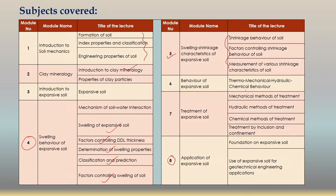In Module 6, I explained the different thermomechanical, hydraulic and chemical behaviour of expansive soil — how expansive soil behaves when there is a temperature change, or when it comes in contact with different chemicals, under different mechanical forces, and what is its hydraulic behaviour under different factors. So in this module I discussed the thermomechanical, hydraulic and chemical behaviour of expansive soil.